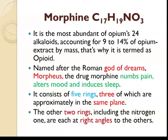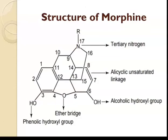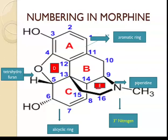Morphine consists of 5 rings. Three of them are approximately in the same plane. The other 2 rings, including the nitrogen-containing one, are each at right angles to the others. This is the general structure of morphine, containing Ring A, Ring B, Ring C, Ring D, and Ring E.